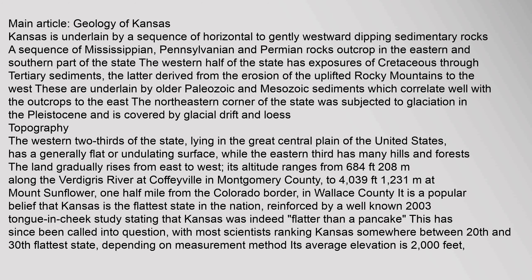Kansas is underlain by a sequence of horizontal to gently westward-dipping sedimentary rocks. A sequence of Mississippian, Pennsylvanian, and Permian rocks outcrop in the eastern and southern part of the state. The western half has exposures of Cretaceous through Tertiary sediments, derived from the erosion of the uplifted Rocky Mountains to the west. The northeastern corner of the state was subjected to glaciation in the Pleistocene and is covered by glacial drift. The western two-thirds, lying in the great central plain of the United States, has a generally flat or undulating surface, while the eastern third has many hills and forests. The land gradually rises from east to west.